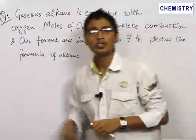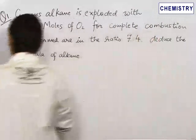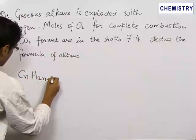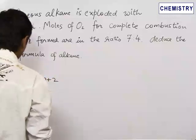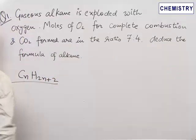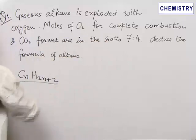Now as you know that alkane is represented by CnH2n plus 2, and when they are treated with oxygen they will give carbon dioxide and water. So let us assume our alkane is CnH2n plus 2. In order to deduce the formula of alkane we need to find what is n.